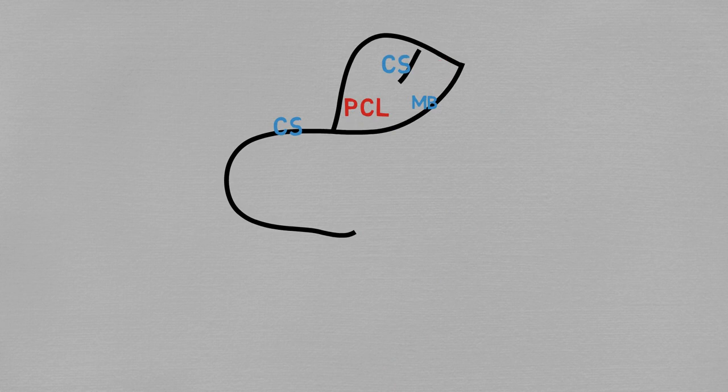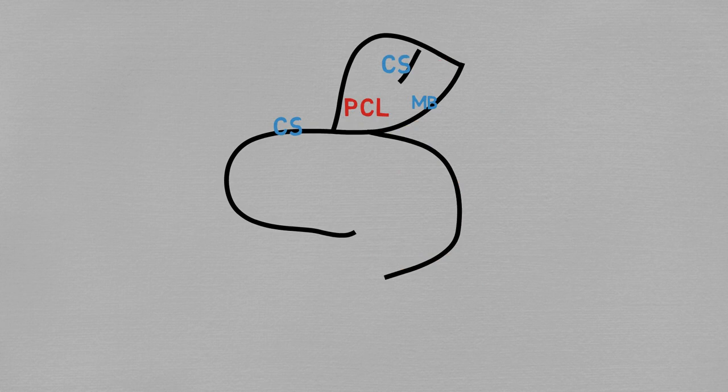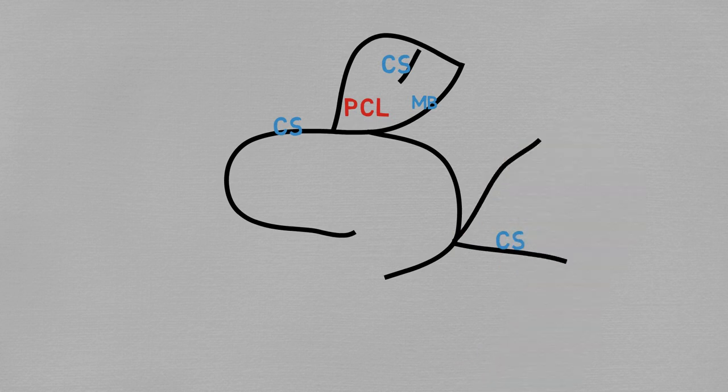If we continue the cingulate sulcus, it ends here, as it's entering the temporal lobe, and from this sulcus we can draw the all-important calcarine sulcus, going posteriorly, and the parietal occipital sulcus, angling upwards.